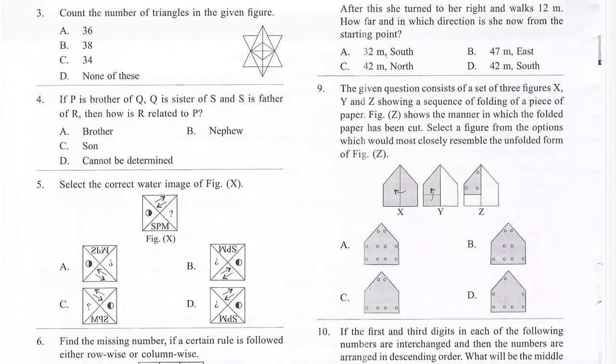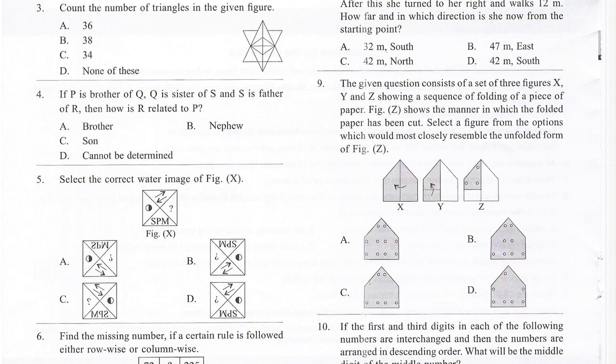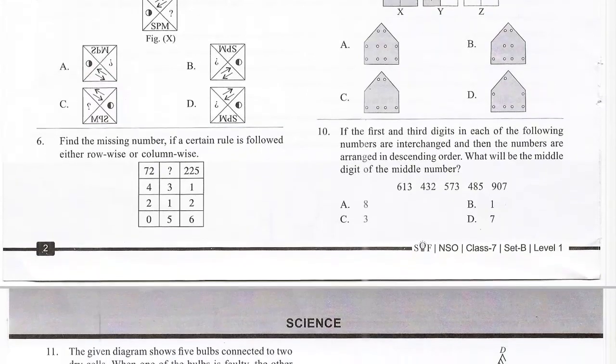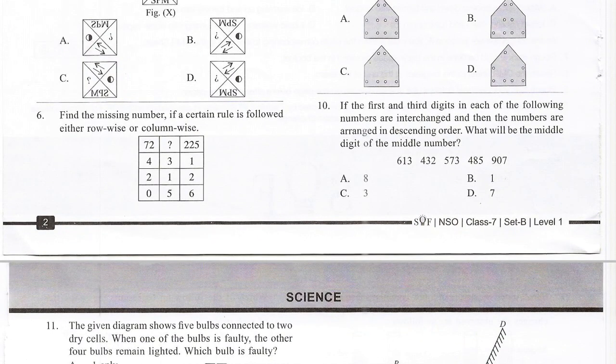Question 9: The given question consists of a set of three figures X, Y, and Z showing a sequence of folding of a piece of paper. Figure Z shows the manner in which the folded paper has been cut. Select a figure from the options which would most closely resemble the unfolded form of figure Z.